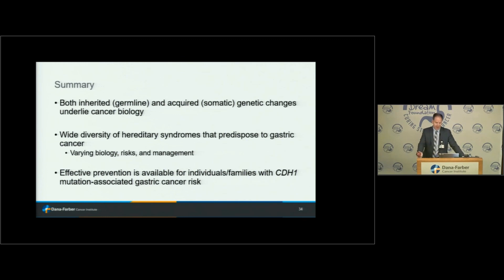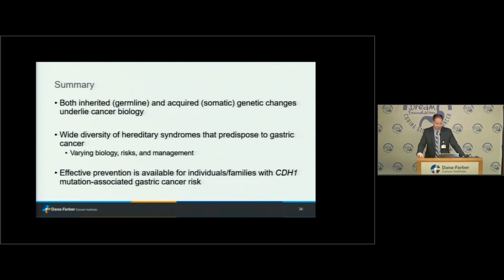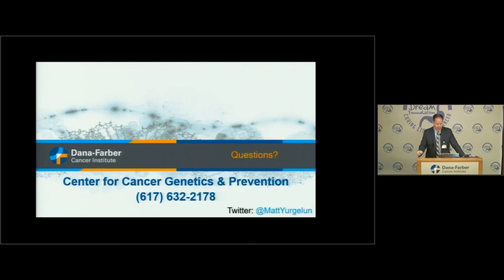In summary, both inherited and acquired genetic changes are important in underlying cancer biology. There's a wide diversity of syndromes that can predispose to gastric and esophageal cancer with varying biology, varying degrees of risk, and varying approaches to management — from simple screening to aggressive surgery. Effective prevention is available for individuals and families with these syndromes, including the most notorious, CDH1, where there's a pretty high lifetime risk of stomach cancer.